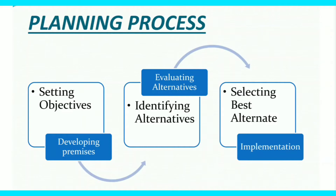The next step is evaluating alternatives. Under this step, all the options which management is considering will be studied in the form of pros and cons — means advantages and disadvantages. For each of the options, it will be analysed by the management that if they adopt a particular option, what advantages can be derived and what disadvantages can be there. This evaluation part will be done under the 4th step.